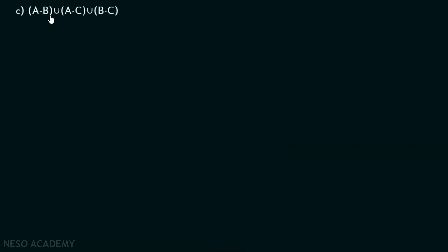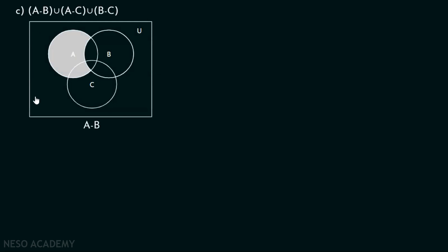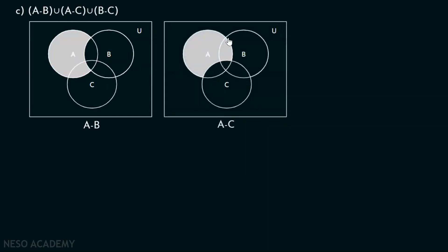Now, how to draw the Venn diagram for A minus B union A minus C union B minus C. First, we will draw the Venn diagram for A minus B, A minus C and B minus C, then we will draw the Venn diagram for their union. A minus B means all A but not B — the common area must not be included. This shaded region represents A minus B, as this is only A with no B included. A minus C means all A but not C — this shaded region represents A minus C.